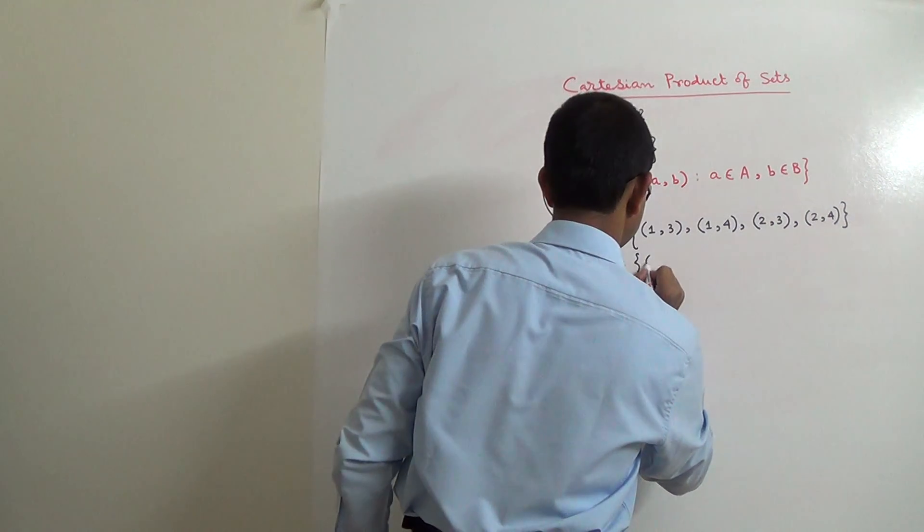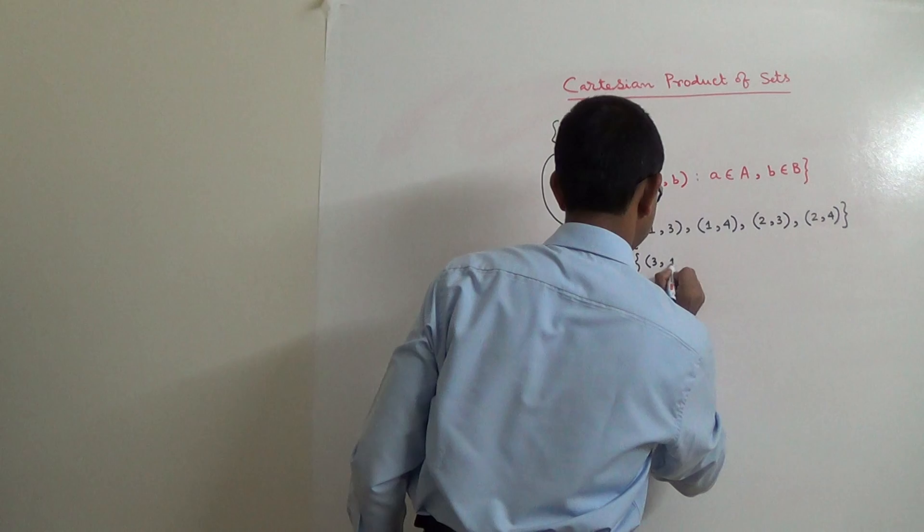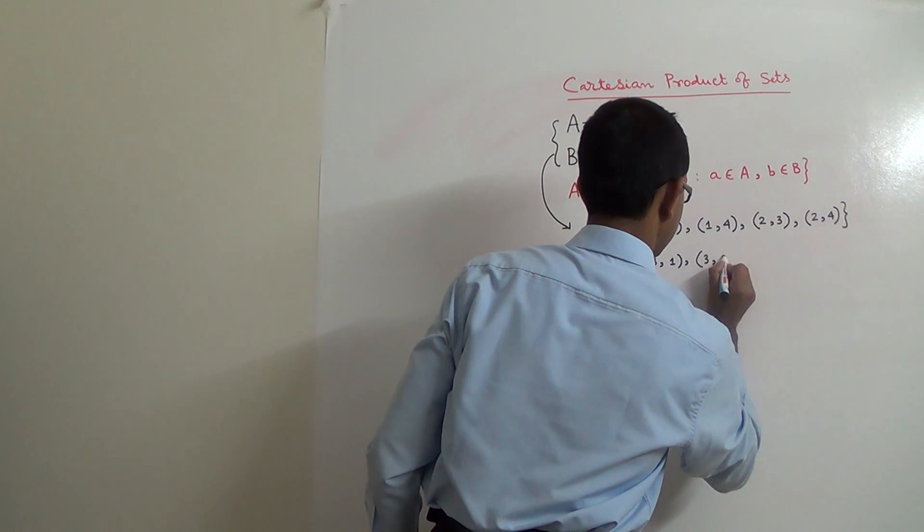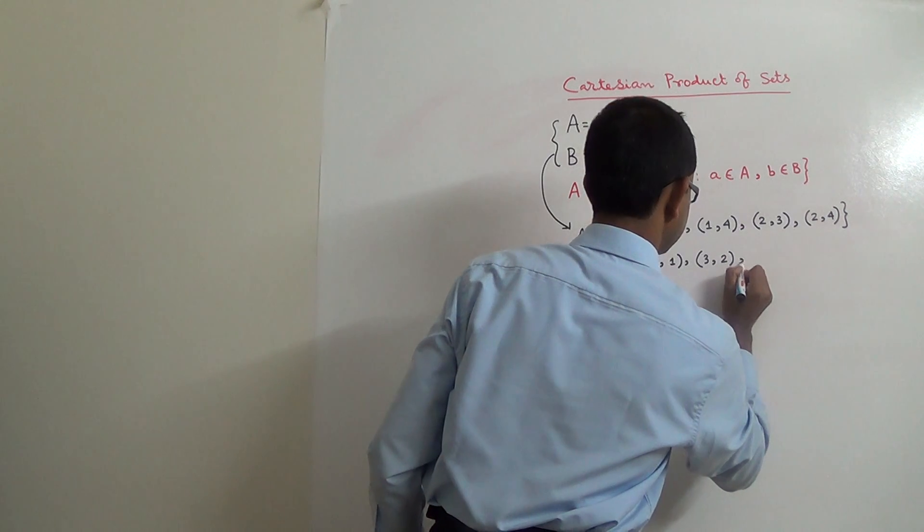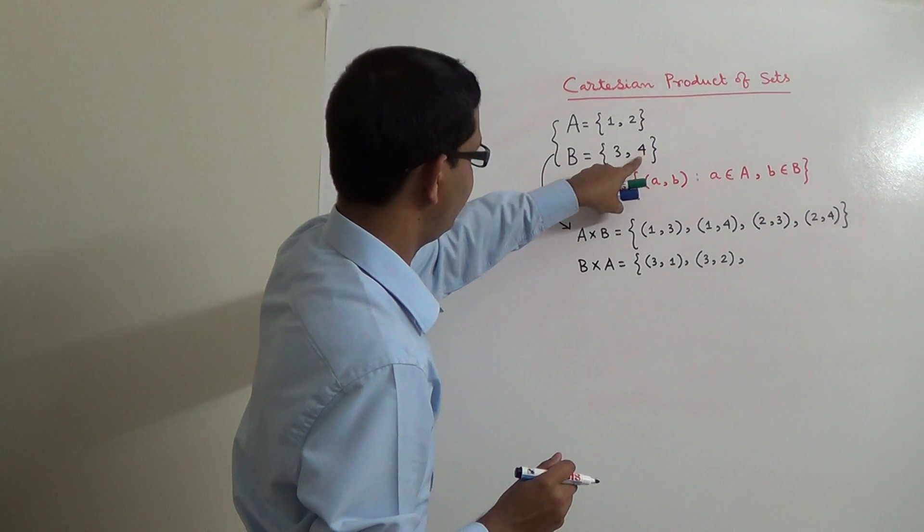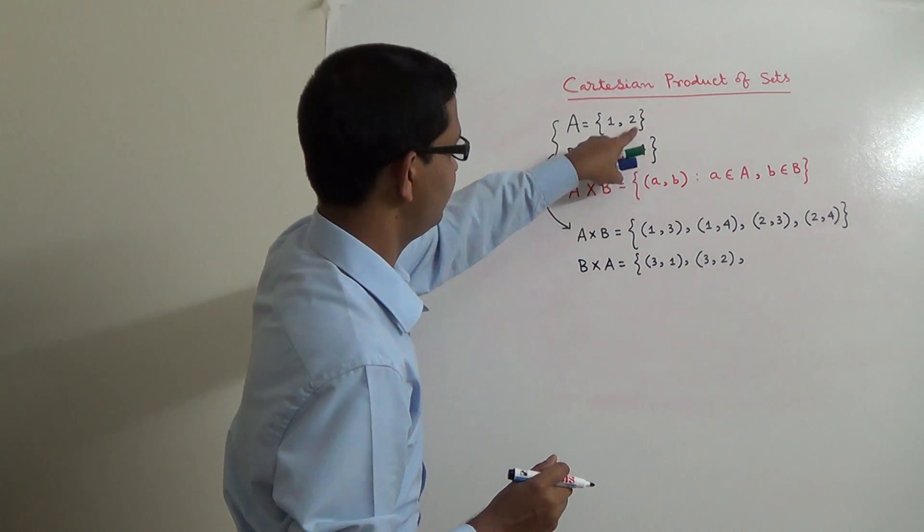B cross A will be (3,1), (3,2), (4,1) and finally (4,2).